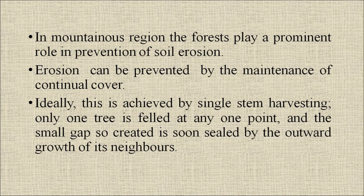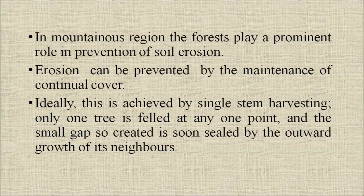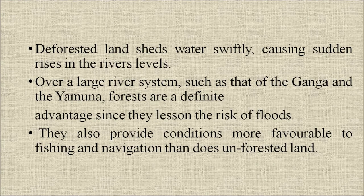In mountainous regions, forests play a prominent role in prevention of soil erosion. Erosion can be prevented by the maintenance of continual cover — ideally this is achieved by single-stem harvesting, where only one tree is felled at any one point and the small gap created is soon sealed by the outward growth of its neighbors. Deforested land sheds water swiftly, causing sudden rise in river levels. Over a large river system such as that of the Ganga and Yamuna, forests are a definite advantage since they lessen the risk of floods and also provide conditions favorable to fishing and navigation.